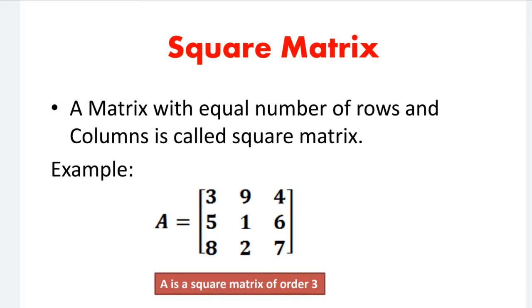In this matrix, we can see how many rows there are. Row 1: 3, 9, 4. Row 2: 5, 1, 6. Row 3: 8, 2, 7. So there are 3 rows. The columns are 3, 5, 8 — 9, 1, 2 — 4, 6, 7, making 3 columns. The order of this matrix is 3 by 3. Because the number of rows and columns is equal, this is a square matrix.